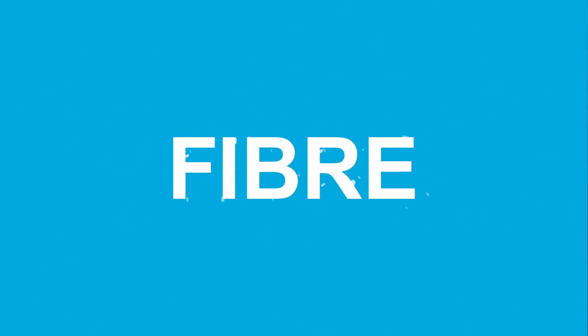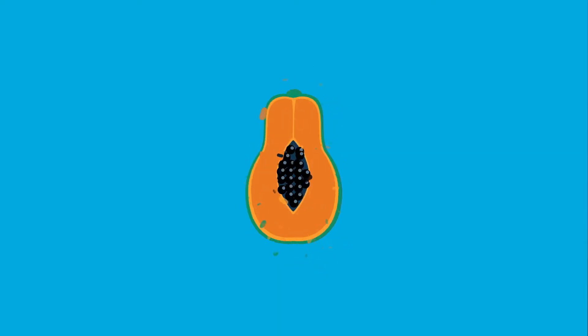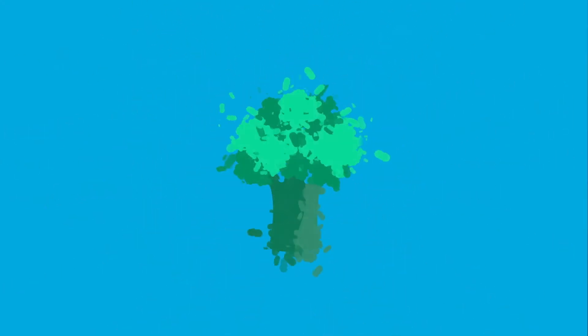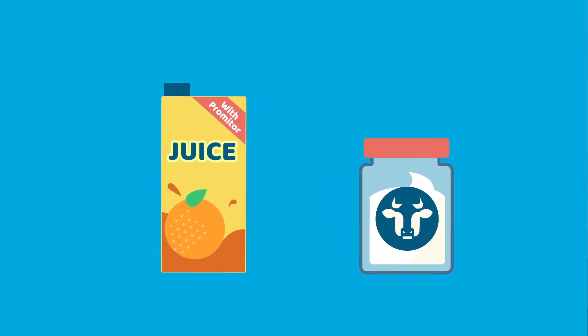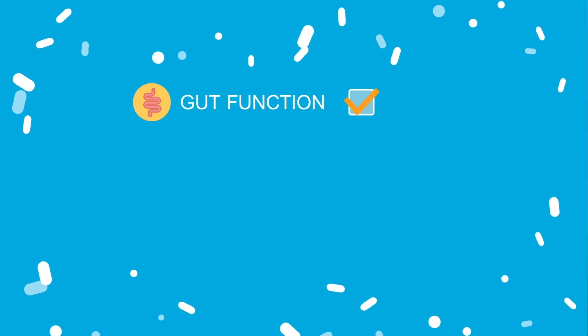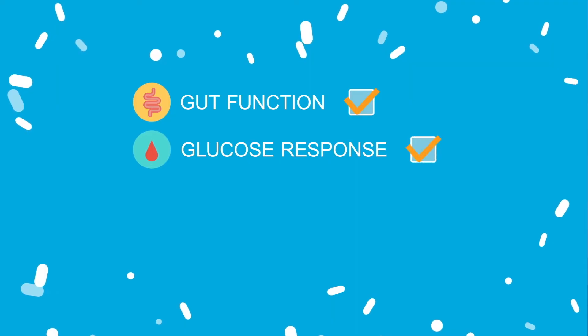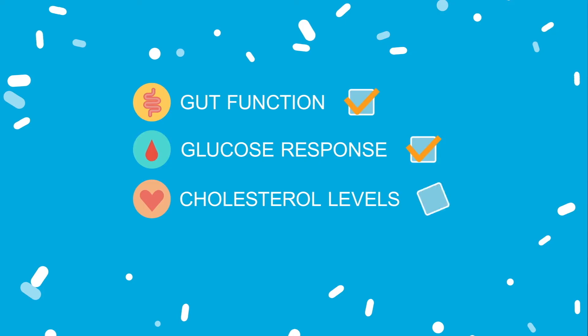Dietary fibre is a nutrient that can be found in fruits, vegetables and grains. Fibre can also be added to a wide range of food and drinks. Different types of fibres provide various benefits, such as helping to maintain healthy gut function and supporting healthy blood glucose and cholesterol levels.